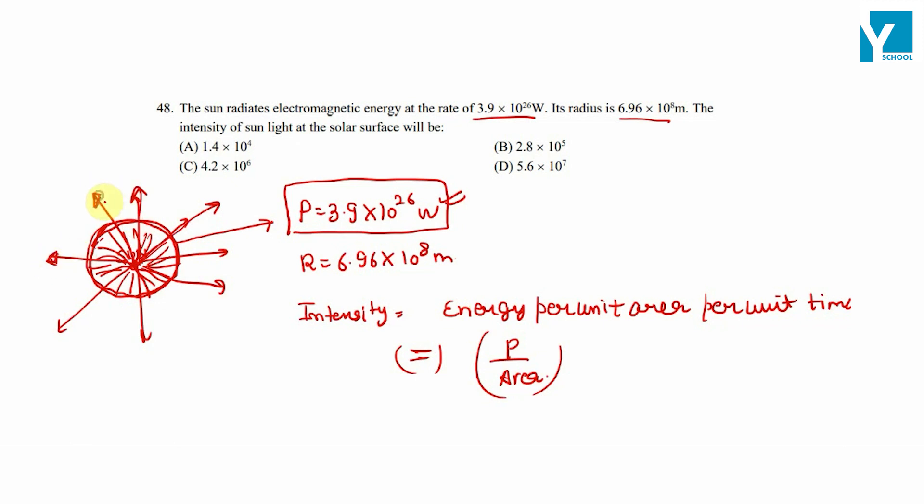The power is given, which is energy per unit time. Now let's calculate the area. We will simply take the surface area of the Sun, which is 4πr².